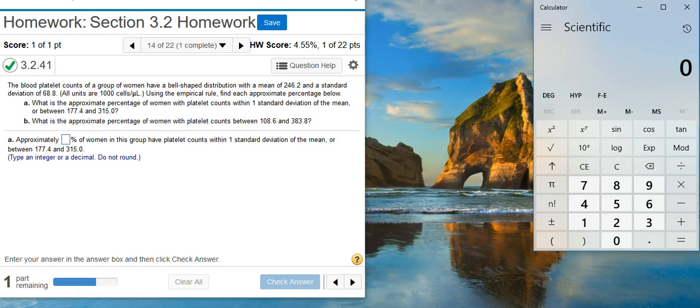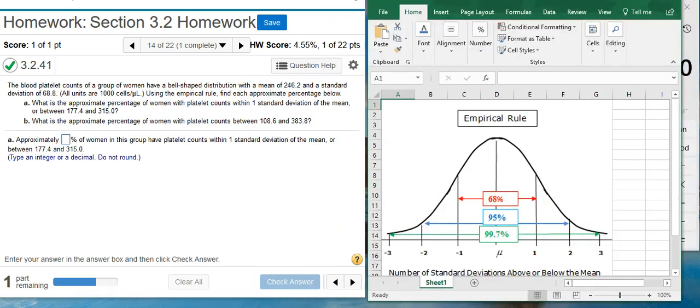So, for this first part of the question, we want to know the approximate percentage of the data set that is within one standard deviation of the mean. To do that, we can just use the empirical rule.